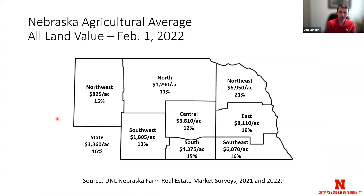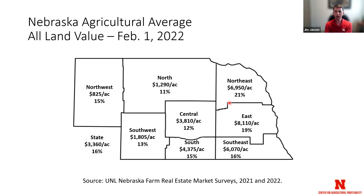The slide we have right now is the all-land ag land value — an average accounting for all different types of land, whether irrigated, dryland, cropland, grazing land, or hayland. For the overall state average across all 45 million acres, the overall average was up about 16%, at $3,360 an acre. We saw a slightly higher rate of increase in the eastern third of Nebraska. We estimated these market values as of February 1, 2022, compared to the prior year.